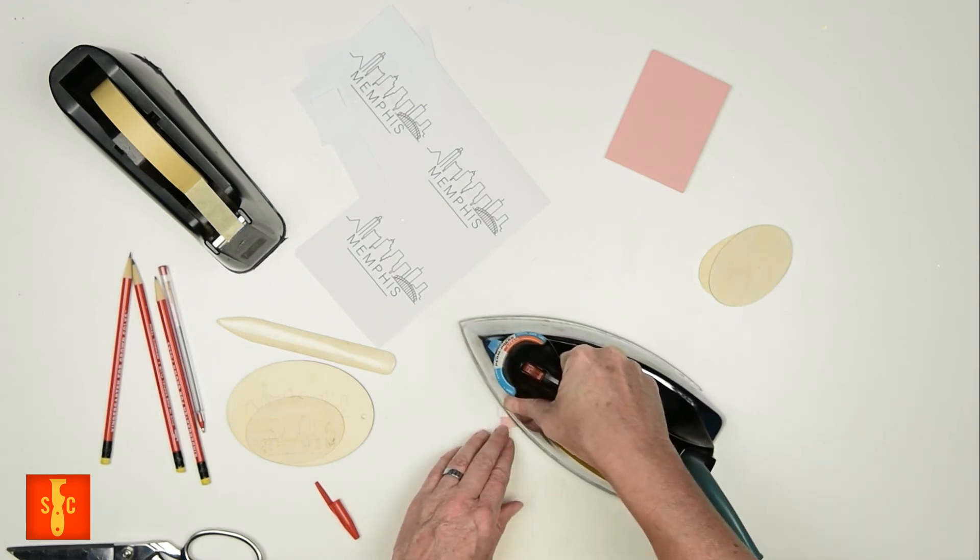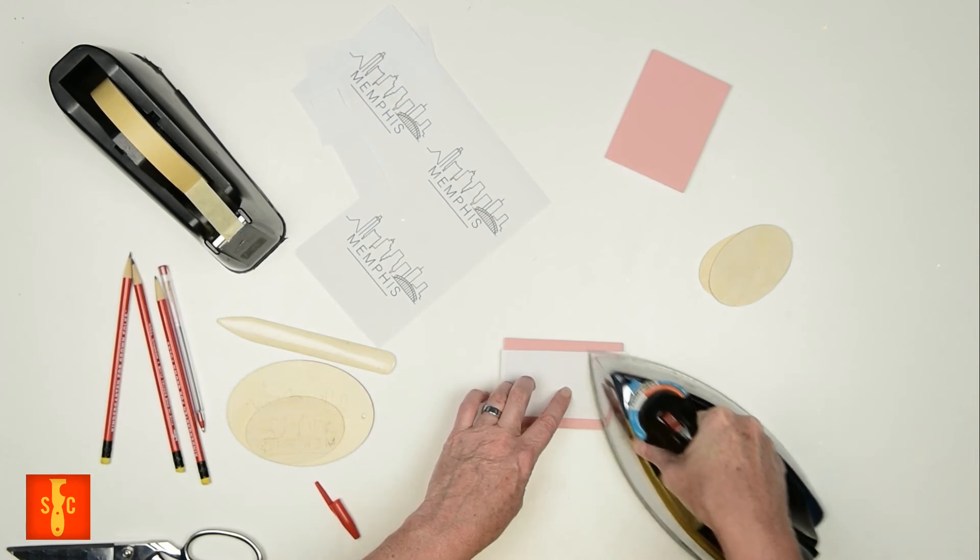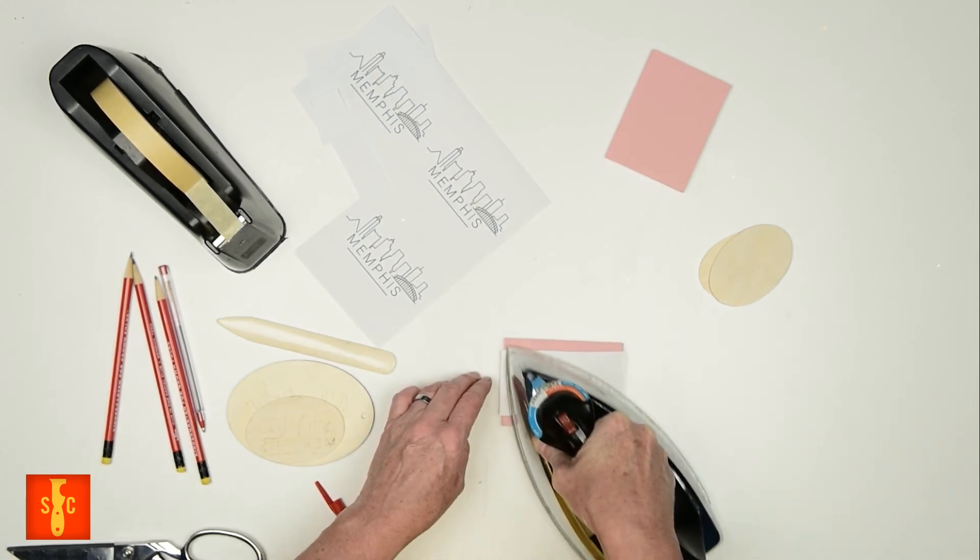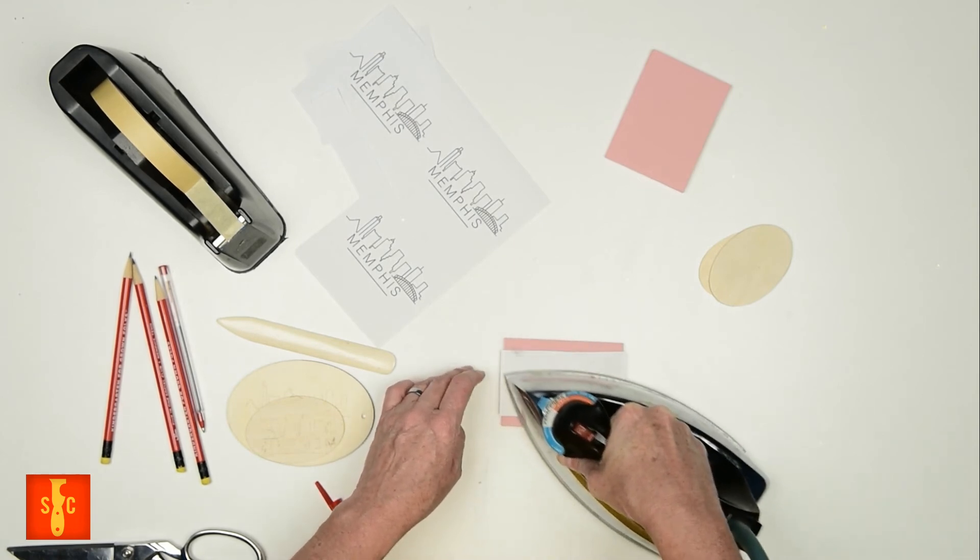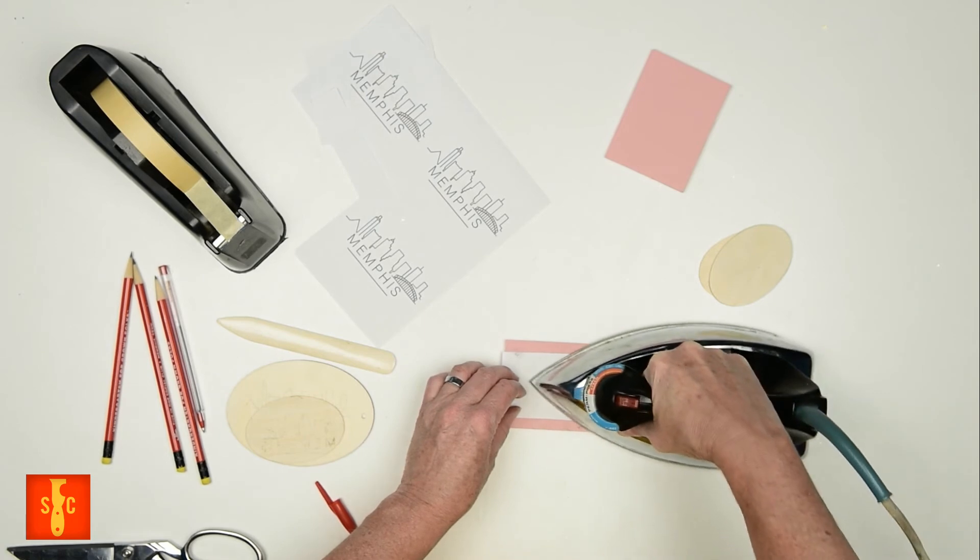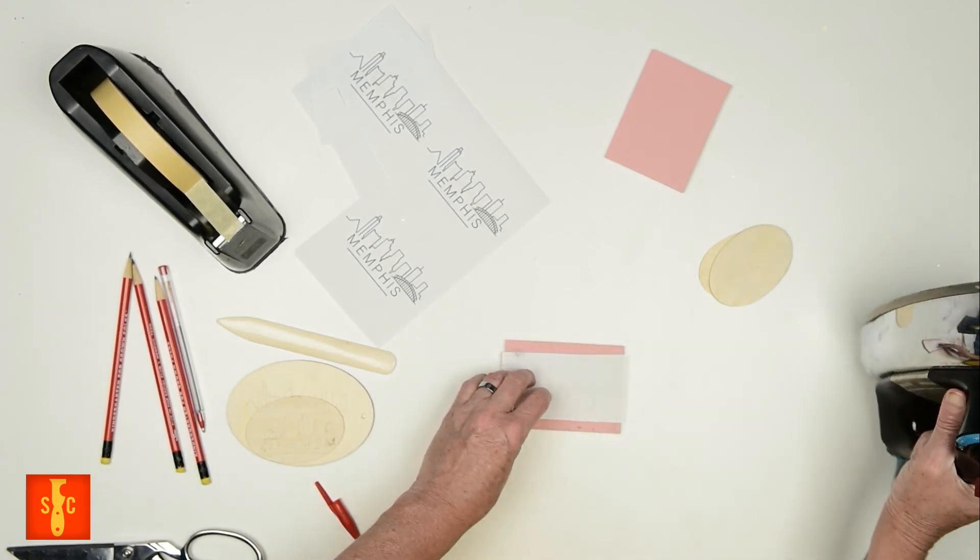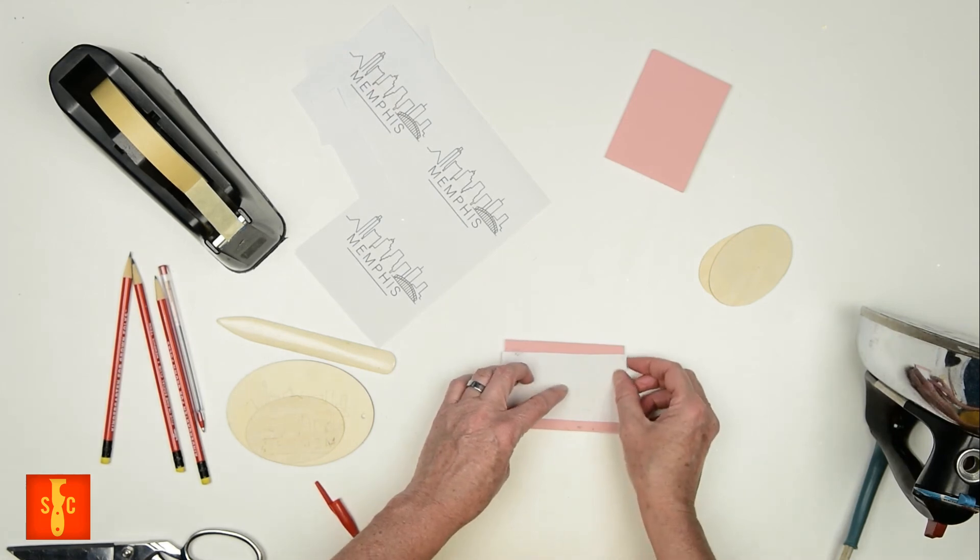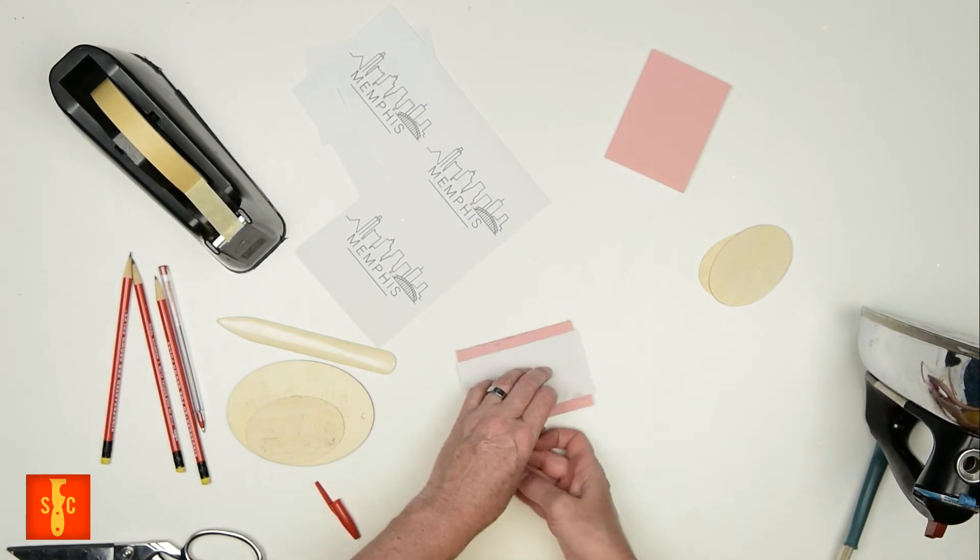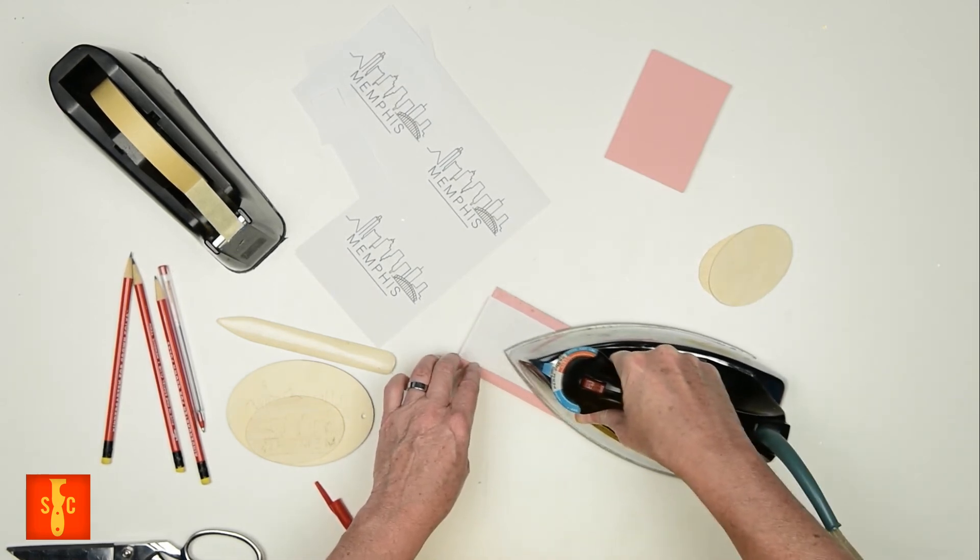And you might want to test your iron before you do this to make sure it's not so hot that you're melting your substrate, especially with speedy carve, because it's a little rubbery. You don't have to worry so much with wood. All right. So I'm going to peel up a little bit and see how it's doing. Oh, y'all, it looks great. So again, this works with toner and not with inkjet.